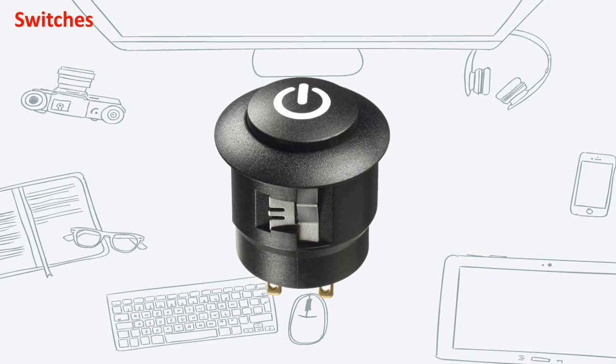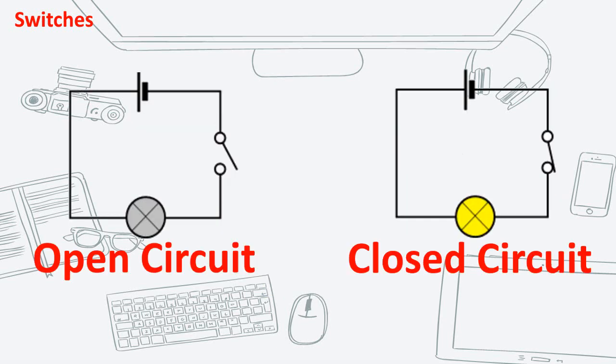Switches are electronic components that control the current flow of a circuit without having need to manually cut the wires. These are critical components to any circuit that requires user control. A switch has two states: open or closed. If it is in the off state, it looks like an open gap in the circuit — in effect, an open circuit that prevents current from flowing. In the on state, the switch is like a conducting wire, closing the circuit and allowing current to flow to all the devices.